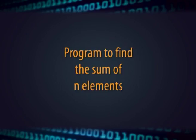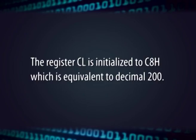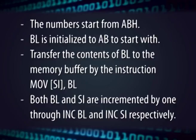Let us take the example of another program to find the sum of N elements. We assume there are 200 data elements stored in the memory buffer having offset defined by register SI. Accordingly, register CL is initialized to C8H, which is the decimal equivalent of 200. Next, we have to initialize the memory buffer with some data values, or we can fill up the values by writing a program which stores numbers in some sequence. Let us say our number sequence starts with ABH, so register BL is initialized to ABH.